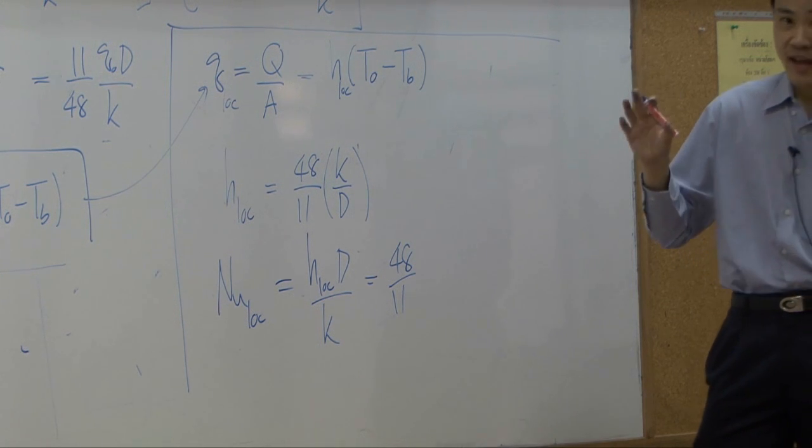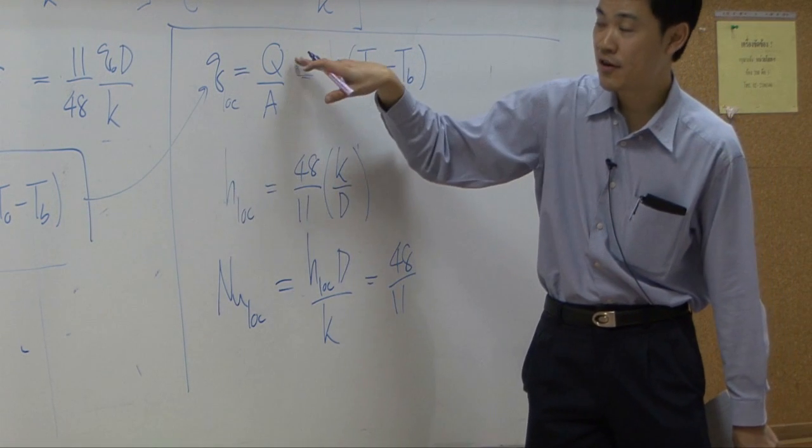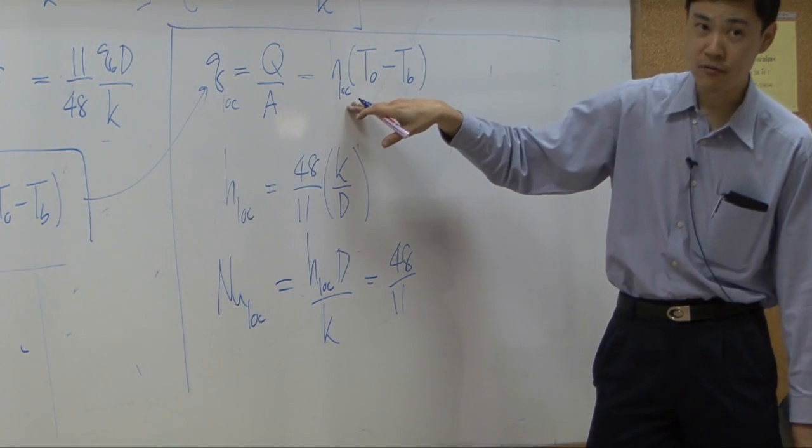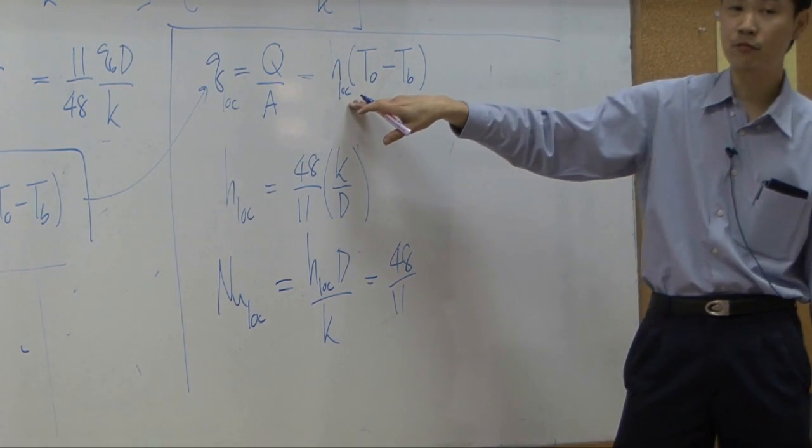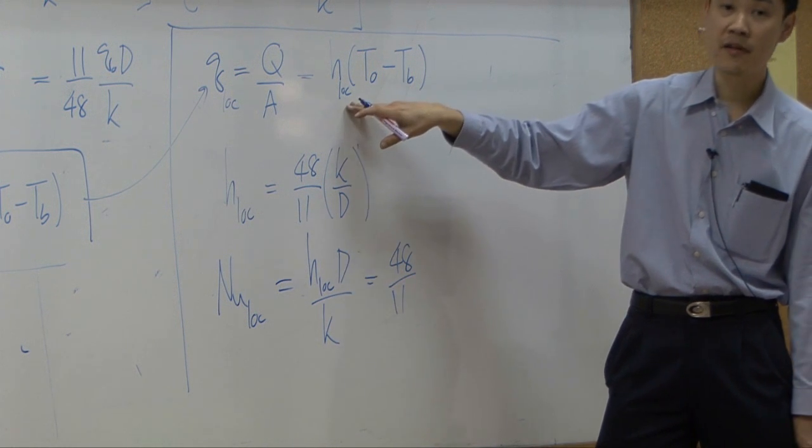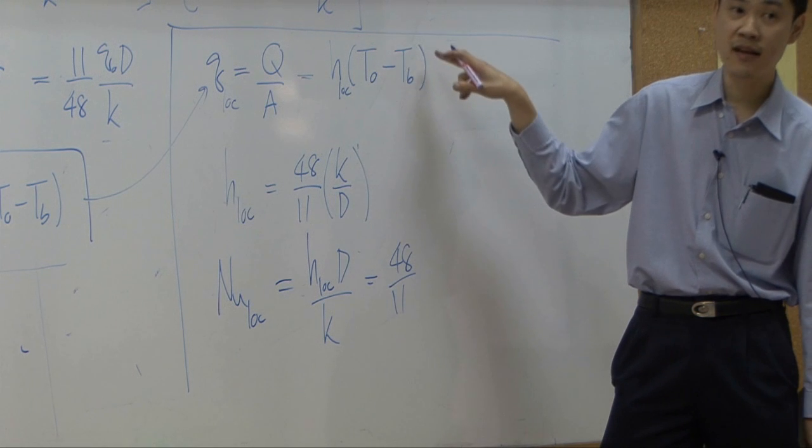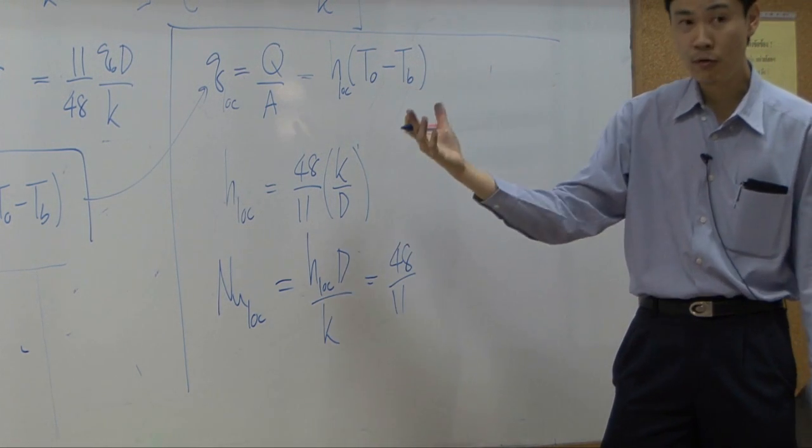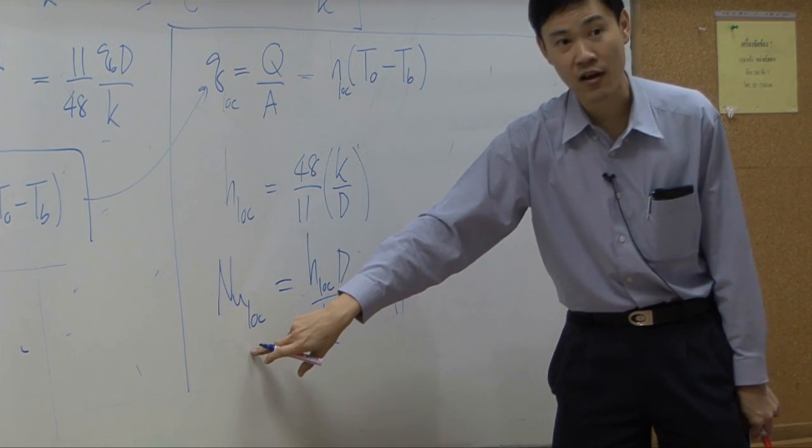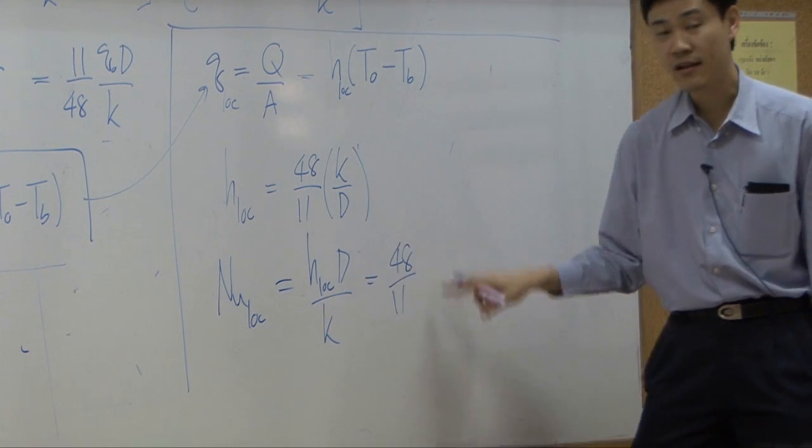So if you change definition here that you use from local heat transfer to logarithmic heat transfer, delta T is supposed to be delta T log mean. You can rearrange, you can get Nusselt number log mean to be another form.